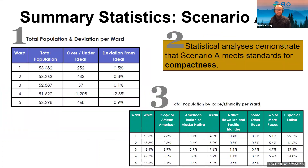Looking at the summary statistics for Scenario A, most wards are under one percent deviation from ideal. The biggest difference is Ward 4, which is 1,208 people underneath the ideal population, or 2.3 percent — still well within that five percent range we're aiming for. Looking at total population by race and ethnicity per ward, there are no huge standouts, with a few different shifts but no big population movements from one ward to the next.